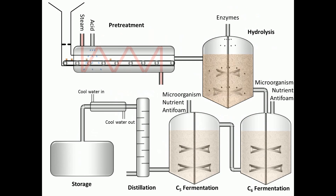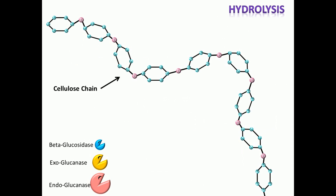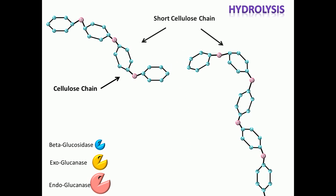Then the pre-treated feedstock is delivered into a hydrolysis reactor. The material must be made less acidic for enzymes and organisms to function optimally in a hydrolysis environment.